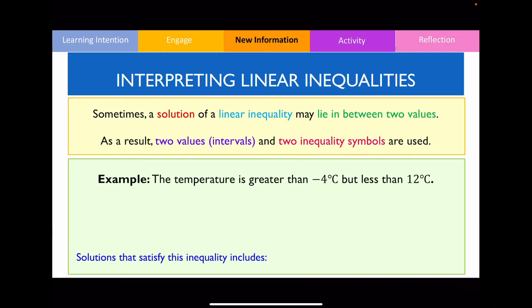Sometimes the solutions for a particular linear inequality may lie in between two particular values. When writing your linear inequality for these sorts of problems, you need to provide two values and two inequality symbols. For example: the temperature is greater than negative 4 degrees but less than positive 12. I can write that as x > -4 and x < 12. The question wants you to write all information into one inequality.